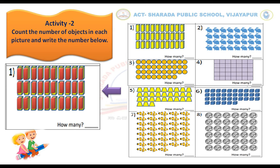Very good. So, total, how many objects are there? Yes, you are right — 30. Then write the number 30 here, like this. The same way, you have to count the objects and write the correct numbers.